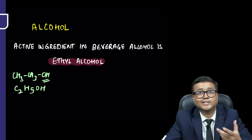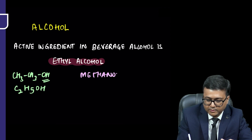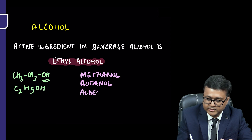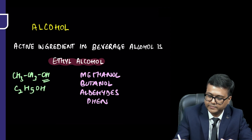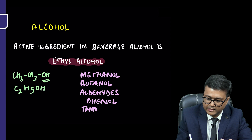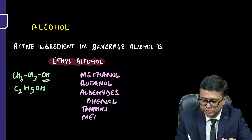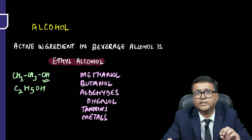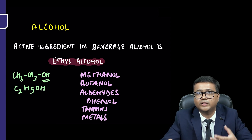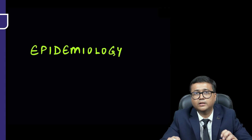Some of the important congeners include methanol, butanol, aldehydes, phenol, tannins, and traces of various metals. These congeners vary based on the method of production and basically give a characteristic taste or flavor to different preparations.